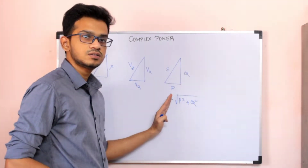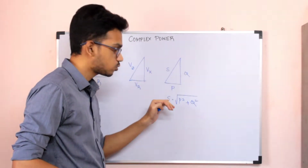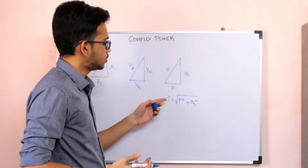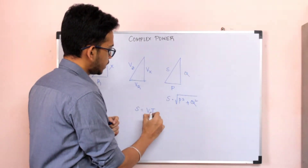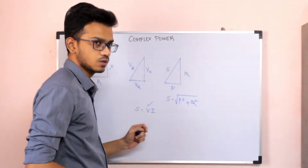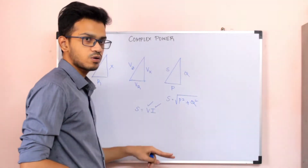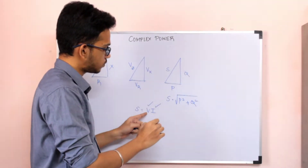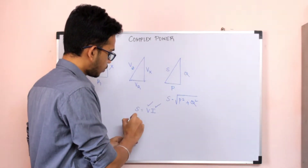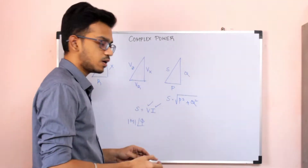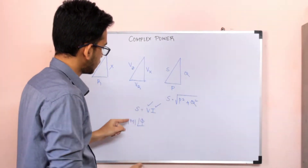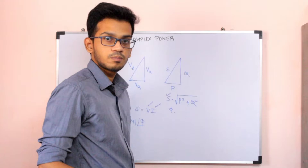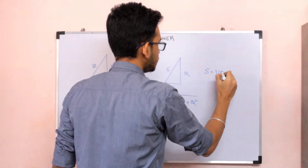In this particular equation, we have the complex power of magnitude. This complex power of phase is the same — why is the angle? S is equal to V into I; we have a phasor quantity. V is the phasor quantity and I is the phasor quantity. When we multiply the magnitudes of the phasors, we get a basic formula for complex power: S is equal to VI*.